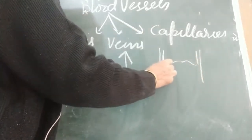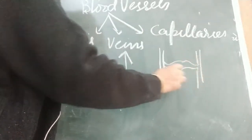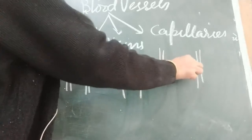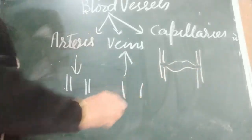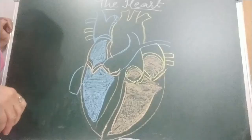Capillaries are thin-walled blood vessels that form a network of extremely tiny blood vessels between arteries and veins. Wherever an artery and vein are meeting, we find capillaries.